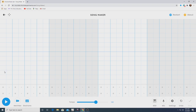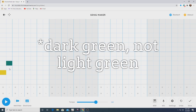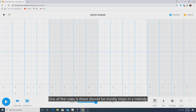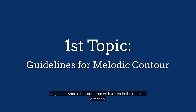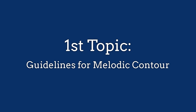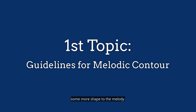What is a leap? A leap merely skips one or more blocks. If we start out with a yellow block, for example, a skip is green or anything above that block. Going back to our guidelines: one rule is there should be mostly steps in a melody — that is, box to the very next box. Another rule is large leaps should be countered with a step in the opposite direction. So generally speaking, if we skip a box, we want to go back in the opposite direction by step. Finally, we want direction changes within the melody — we do not want to go in the same direction on and on. Rather, we want to have more shape to the melody.